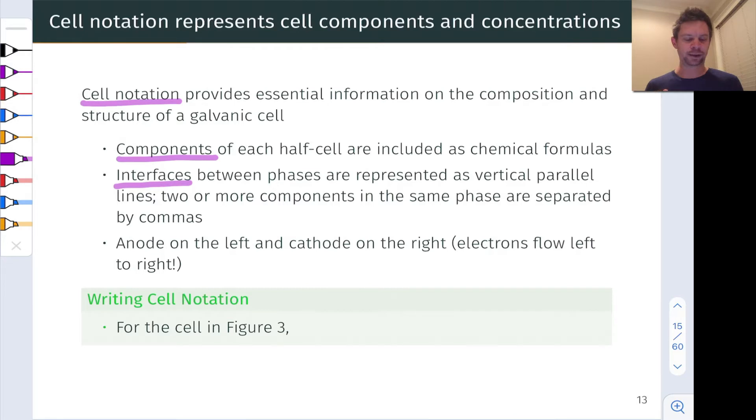We represent interfaces as single vertical lines, and we separate two or more components in the same phase using commas. We use a double parallel line to separate the anode and cathode right at the middle of the cell notation. The anode is written on the left and the cathode is written on the right, so that electron flow occurs from the left-hand side to the right-hand side.